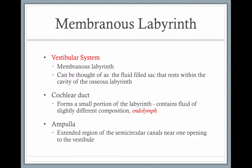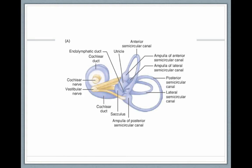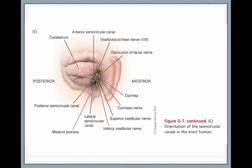The ampulla is the exit region from the semicircular canals near one of the openings in the vestibular system. You see the cochlea on the left, the vestibular system on the right, the three semicircular canals, and the ampulla is that bulge. It's a very tiny structure housed just behind your ear.